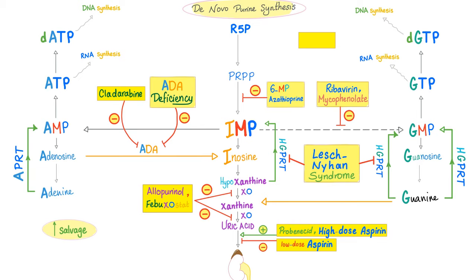Now let's add some pharmacology and pathology. Going upward builds purines; going downward degrades them; the green arrow means salvage. From PRPP into IMP: 6-mercaptopurine and its prodrug azathioprine inhibit this step — we've talked about azathioprine in management of rheumatoid arthritis. Ribavirin and mycophenolate mofetil work by inhibiting the conversion of IMP into GMP.